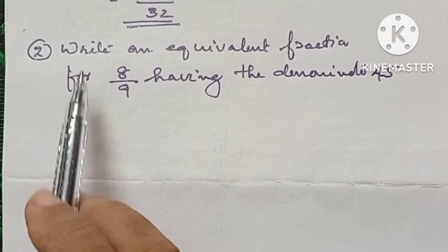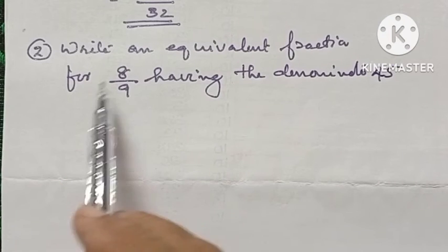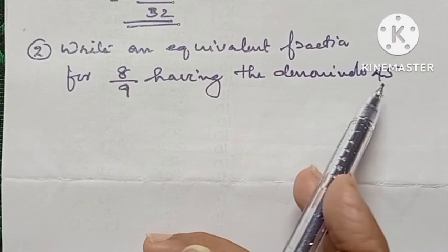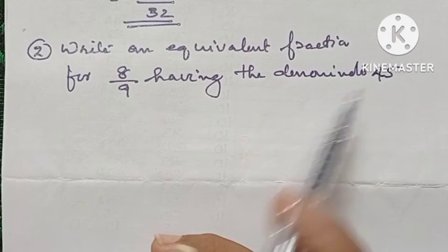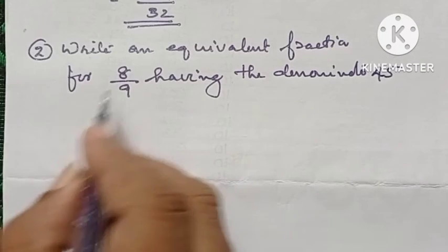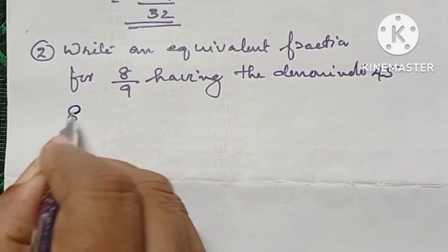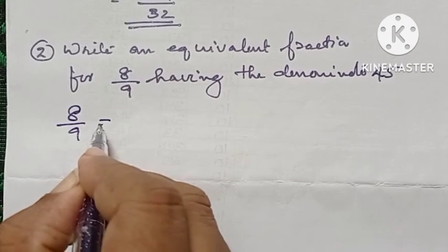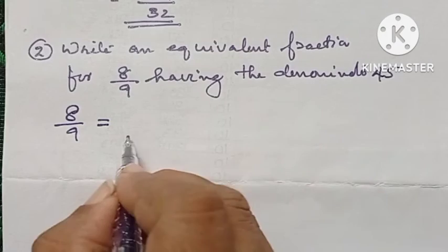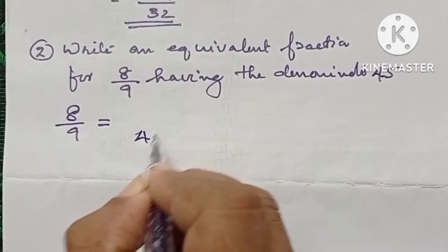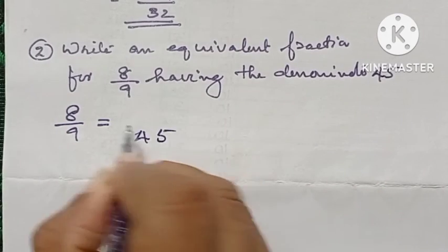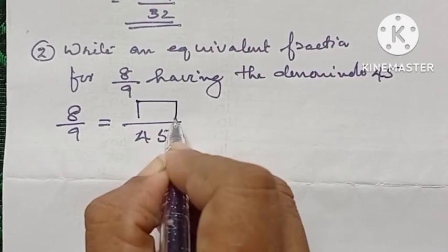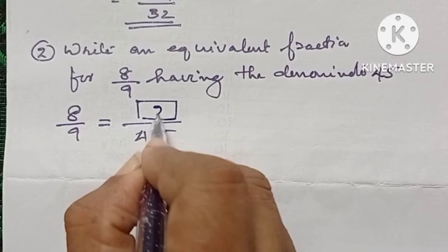Next question: write an equivalent fraction for 8 by 9 having the denominator 45. Our fraction is 8 by 9, and we have to write an equivalent fraction with the denominator 45. We have to find the numerator.